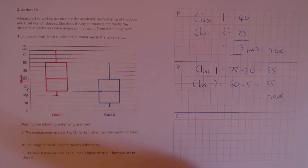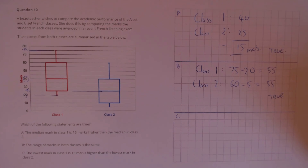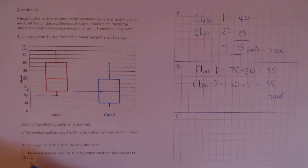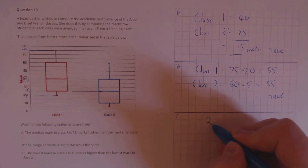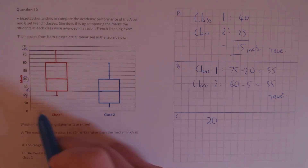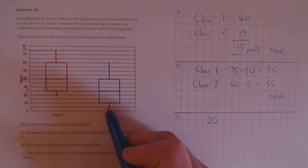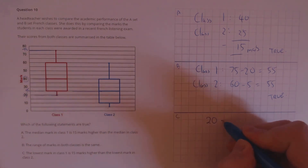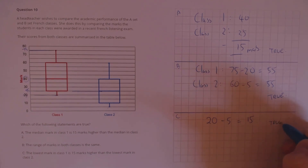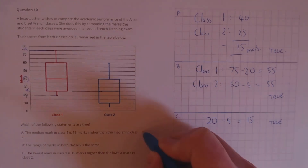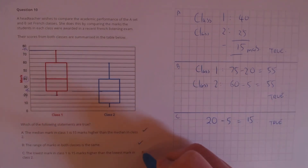C: the lowest mark in class 1 is 15 marks higher than the lowest mark in class 2. The lowest mark in class 1 was 20, and the lowest mark in class 2 was 5, so we find the difference — and that's true, it was 15 marks higher. So all three statements are true.